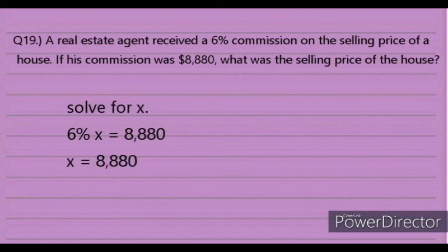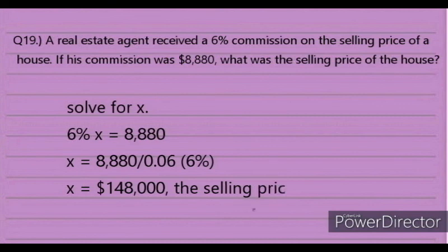Solution: Solve for X. 6% times X equals $8,880. Dividing by 0.06 gives X equals $148,000. Hence $148,000 is the selling price of the house. The answer is letter B.